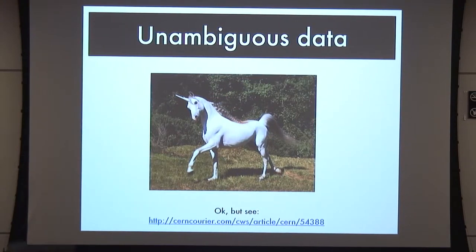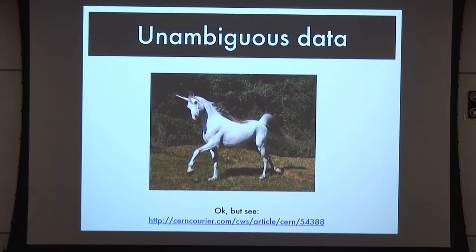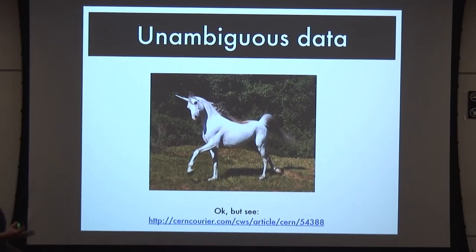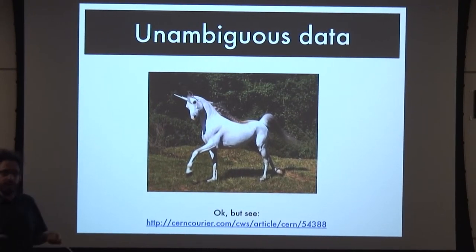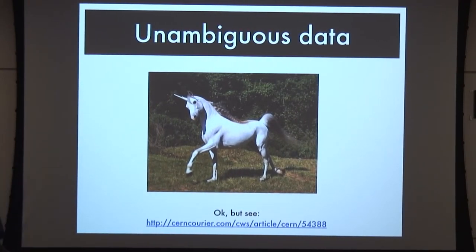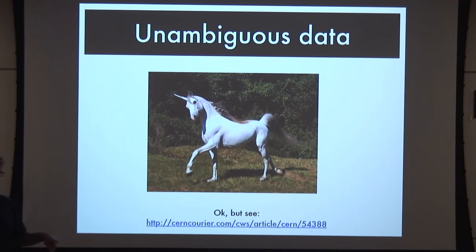So why do we have to do deep learning? The reason is that we don't have simple data. It used to be in particle physics you could look for a particle, see one, and show it to people - one event, found this new particle. Sort of like looking for a unicorn: difficult to find, but once you've found it, everybody's pretty sure it's a unicorn.